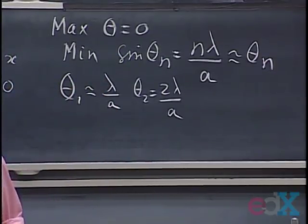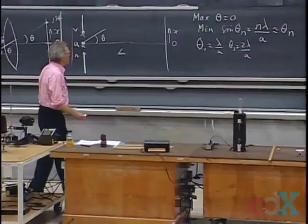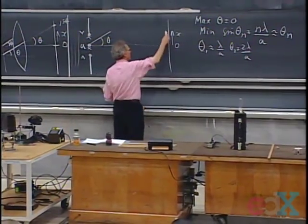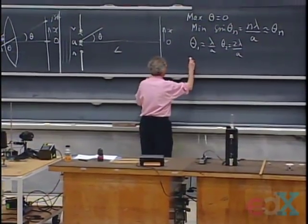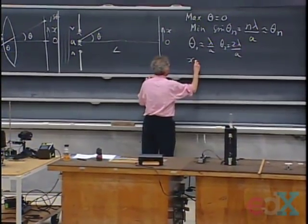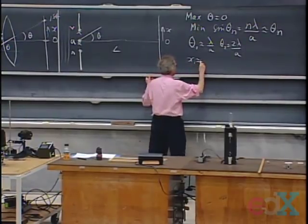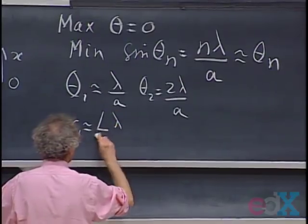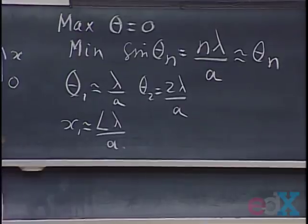The best way to see the equation is correct: at angle theta one, the Huygens source at the top and the one at the bottom have a path difference of lambda — constructive interference. But the source in the middle and the one at the top then have a path difference of half lambda, so they cancel. For every source in the upper half, there is one in the lower half that kills it. So we get complete destructive interference.